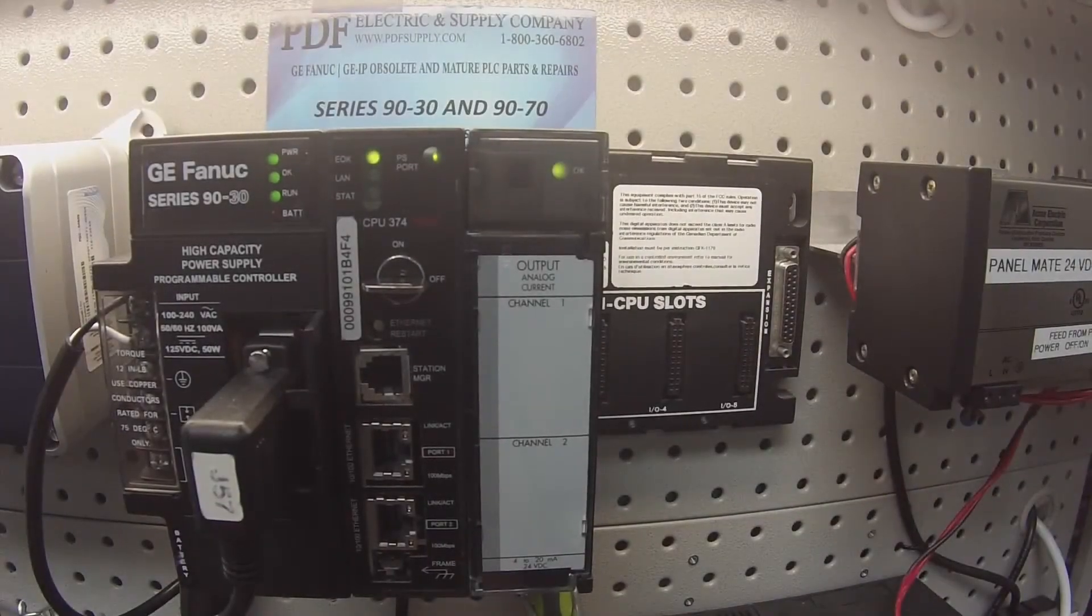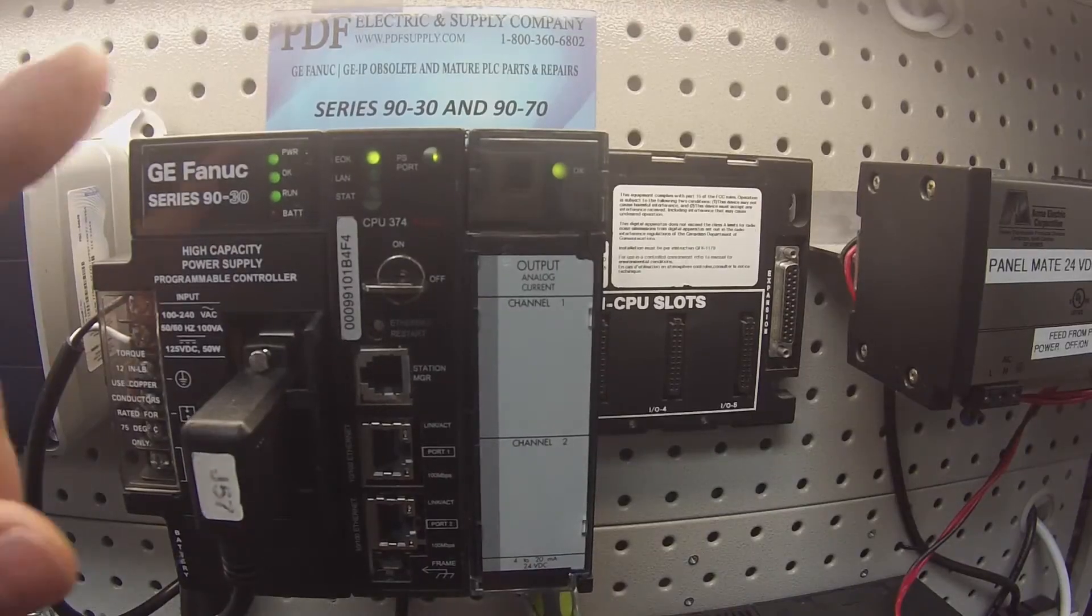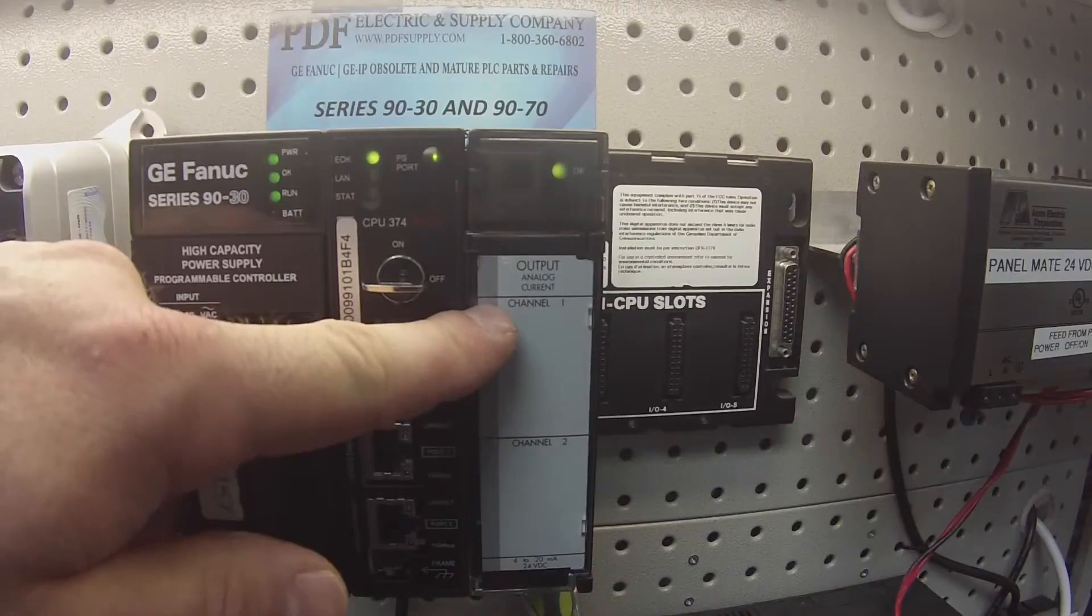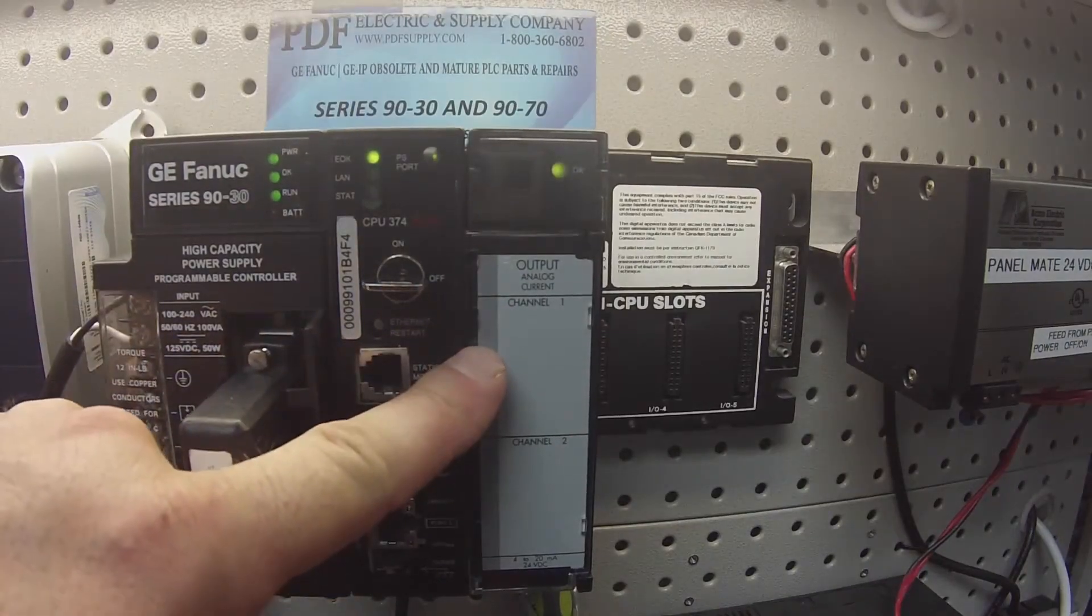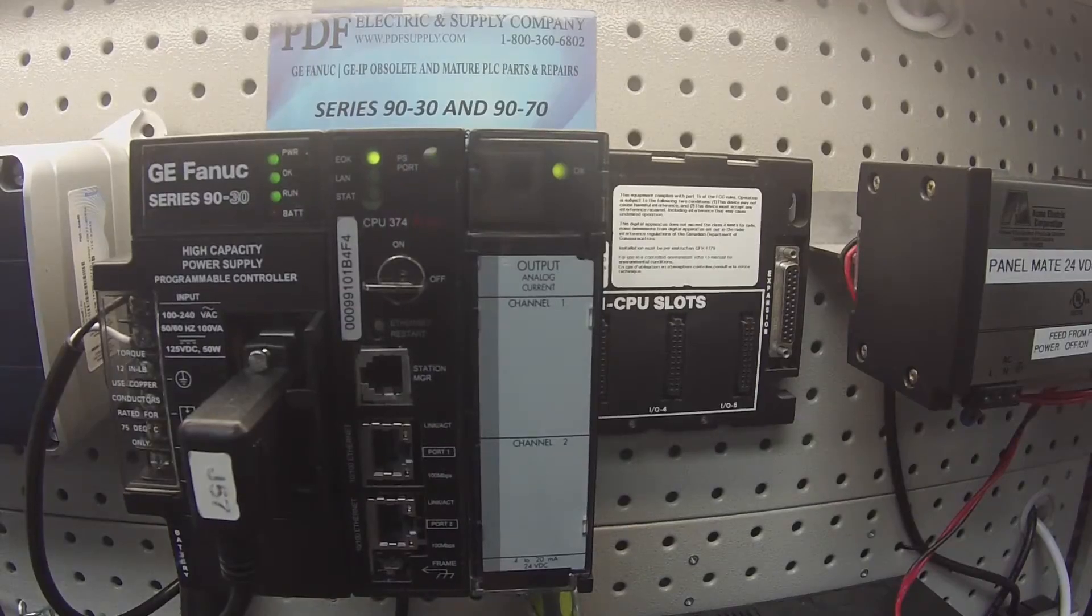Hello and welcome to PDFsupply.com. Today we're going to be testing an IC693ALG391. This is an analog output in current, so it has two channels and it's from 4 to 20 milliamps output.